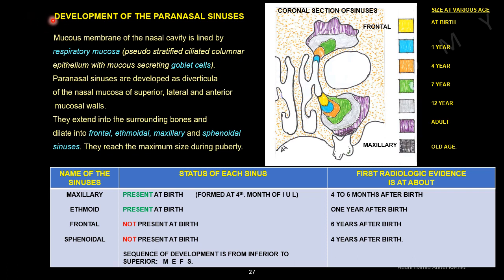Development of the paranasal sinuses. The mucous membrane of the nasal cavity is lined by respiratory mucosa — pseudostratified ciliated columnar epithelium with mucus-secreting goblet cells. Paranasal sinuses develop as diverticula of the nasal mucosa of the superior, lateral, and anterior mucosal walls, extending into surrounding bones and dilating into frontal, ethmoidal, maxillary, and sphenoidal sinuses. They reach maximum size during puberty.